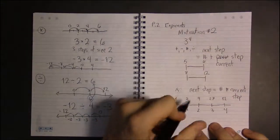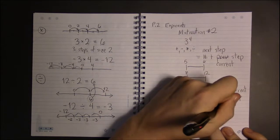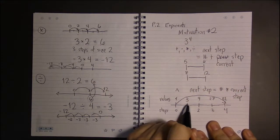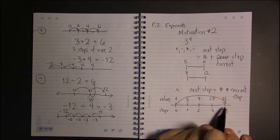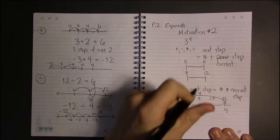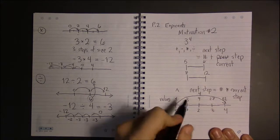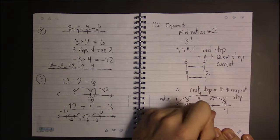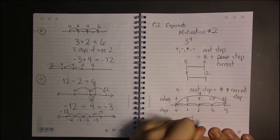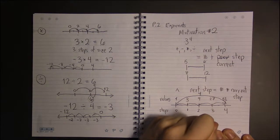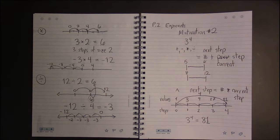So three to the fourth says multiplying, where your steps are multiples of three, moving four of these steps lands you on 81. So that's what three to the fourth is.